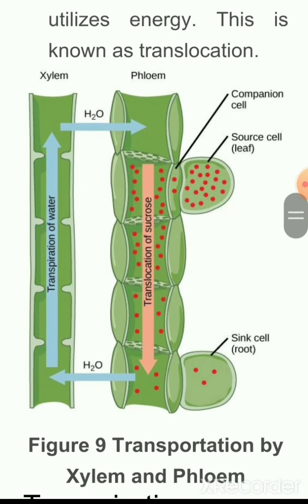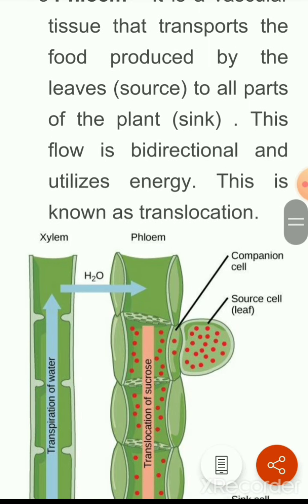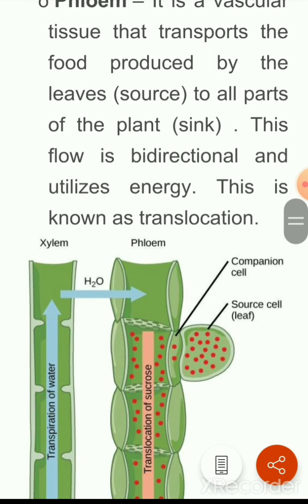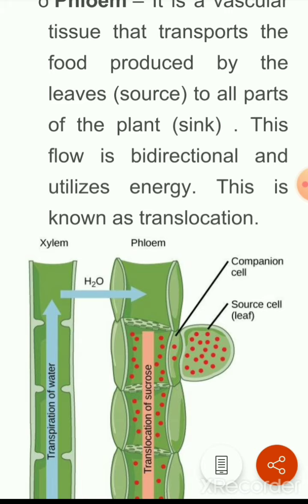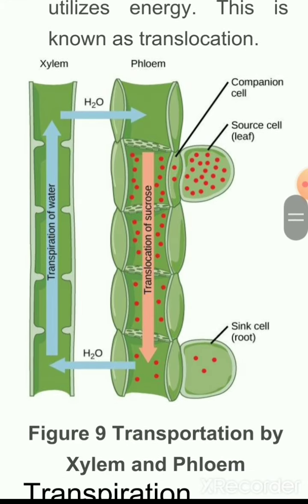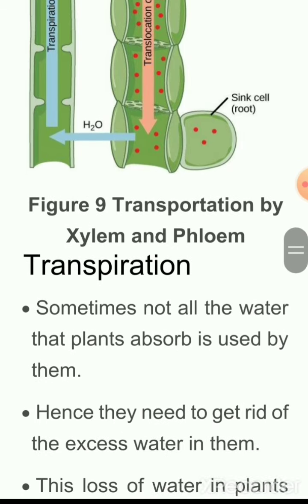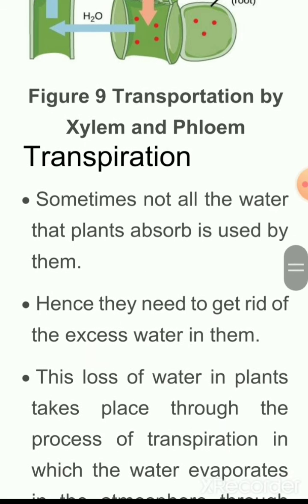You can see the diagram here showing xylem and phloem. Xylem is responsible for the transportation of water, and phloem transports sucrose — sucrose being the form in which glucose made in the leaves is transported through the companion cells.